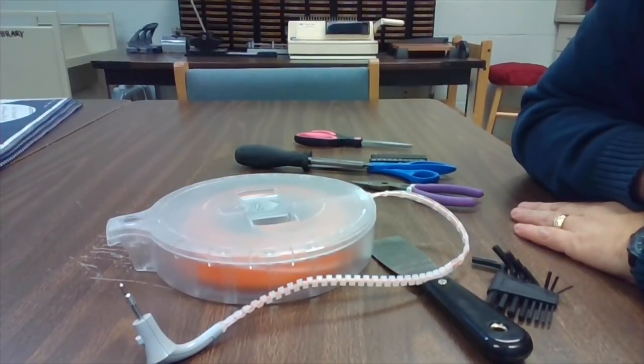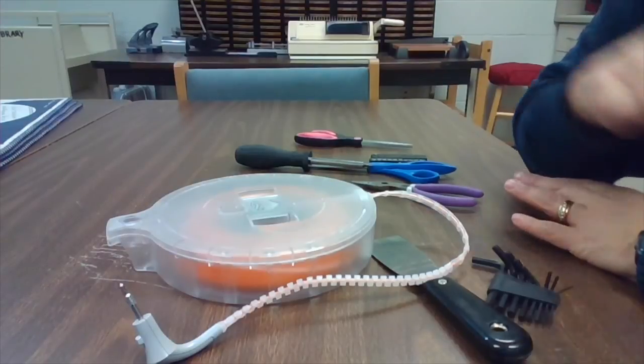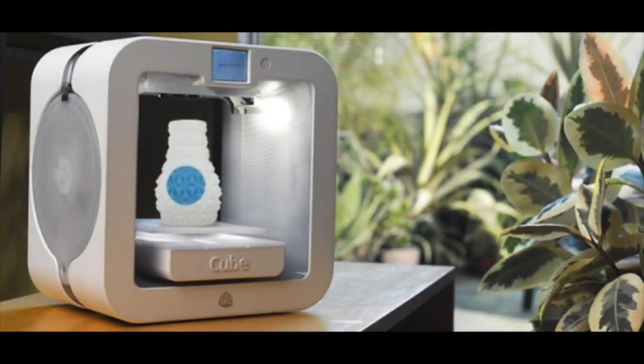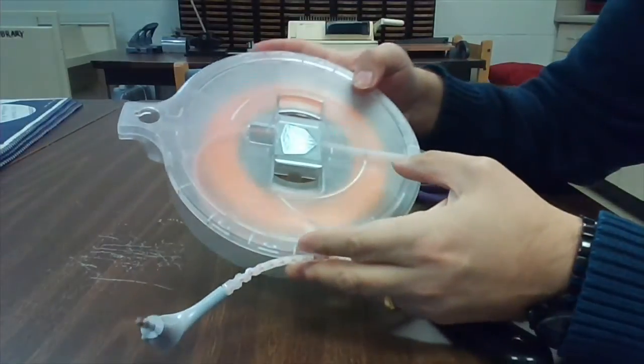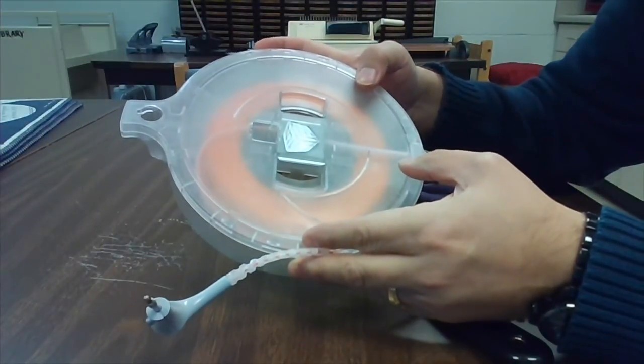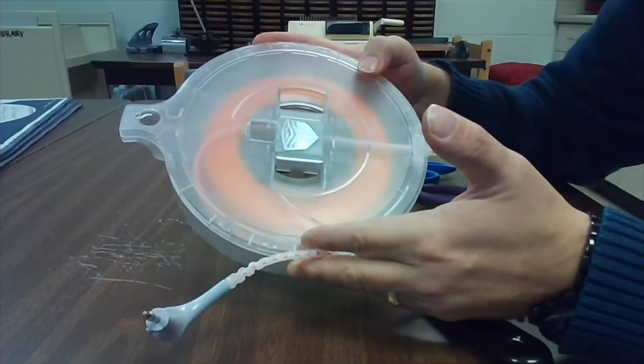We're going to take a look at how to get your 3D printer back and running if you happen to have one of the 3D System's cube printers. It uses this proprietary cartridge that tends to jam and the filament tends to break. So we're going to have to fix that to get you back on your feet again.